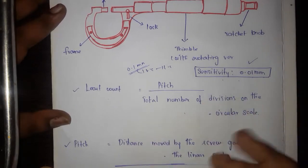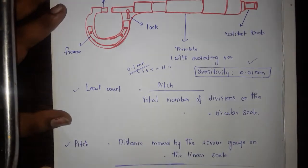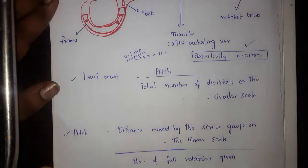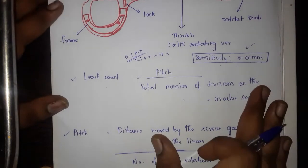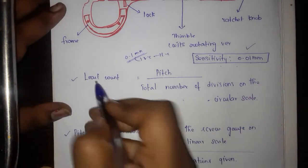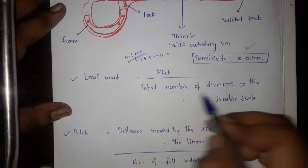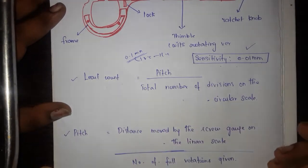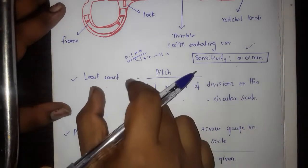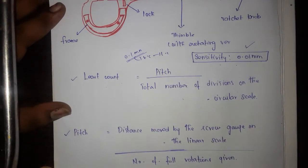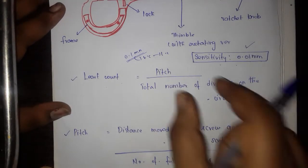With the Screw Gauge, we first find the least count. The least count formula is: Pitch divided by the total number of divisions on the circular scale. So, Least Count = Pitch / Total number of divisions on the circular scale.